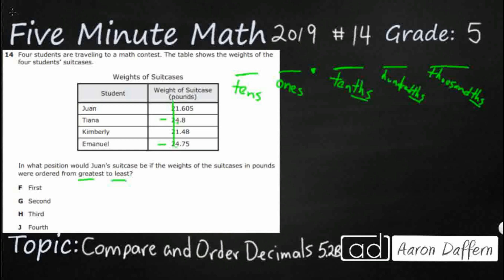So then we go to the next place — the tenths place, the one directly to the right of the decimal point. Look what we have here: we have an eight and a seven. If we just look at the eight and the seven, obviously our eight is going to be biggest. So we're going to write Tiana's first: twenty-four point eight. Now that might look strange because you think, how is eight bigger than seventy-five? Well, we're just looking at the tenths place, and eight is bigger than seven. You can always put zeros after a decimal point to make it look more even — so eight tenths is the same as eighty hundredths, and eighty is definitely bigger than seventy-five.